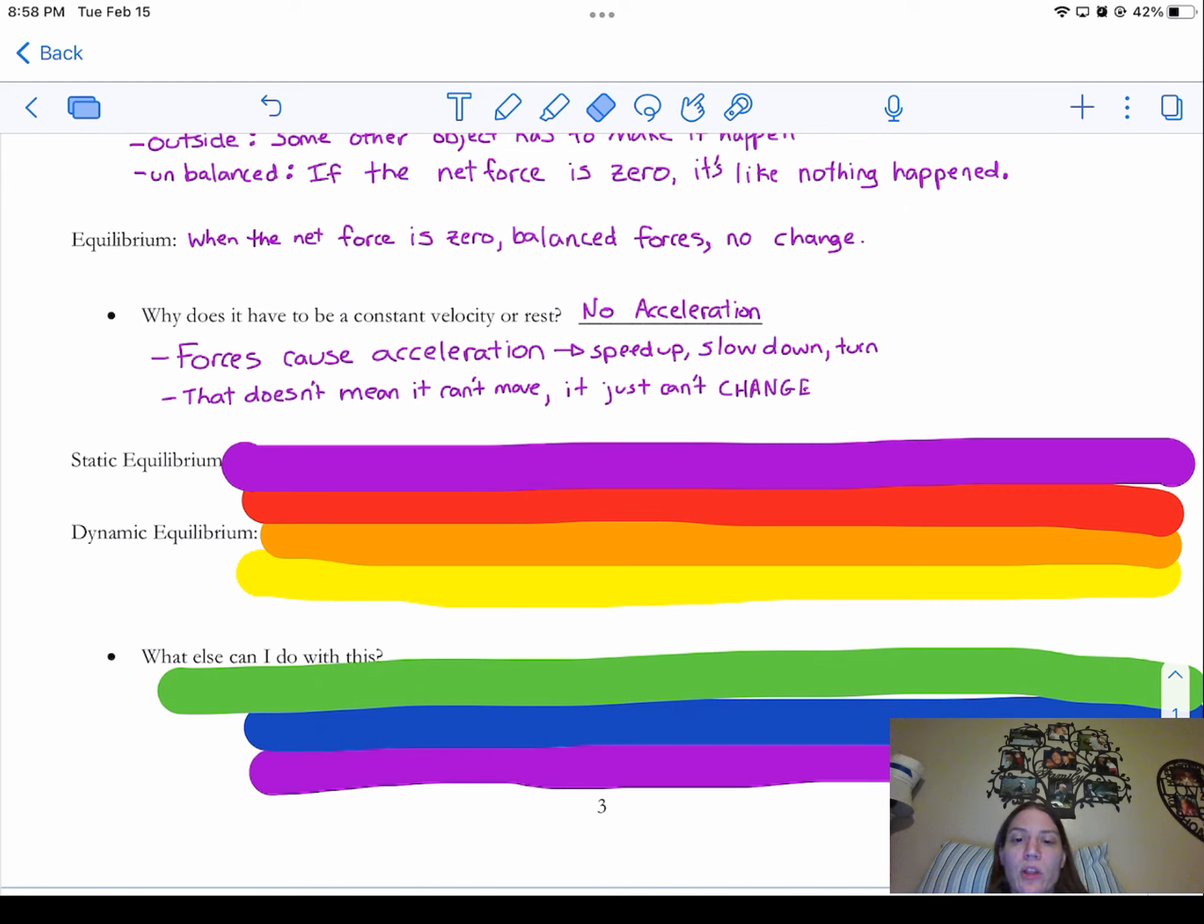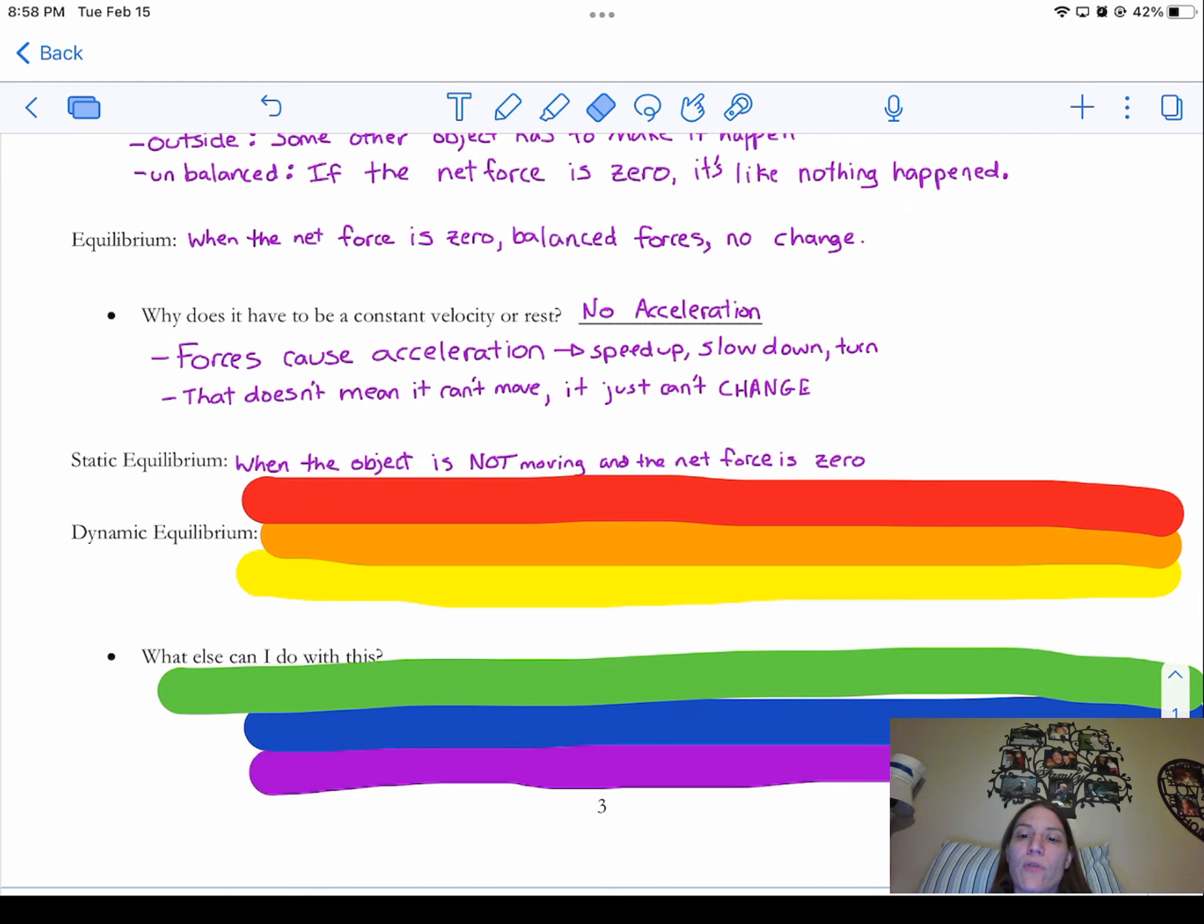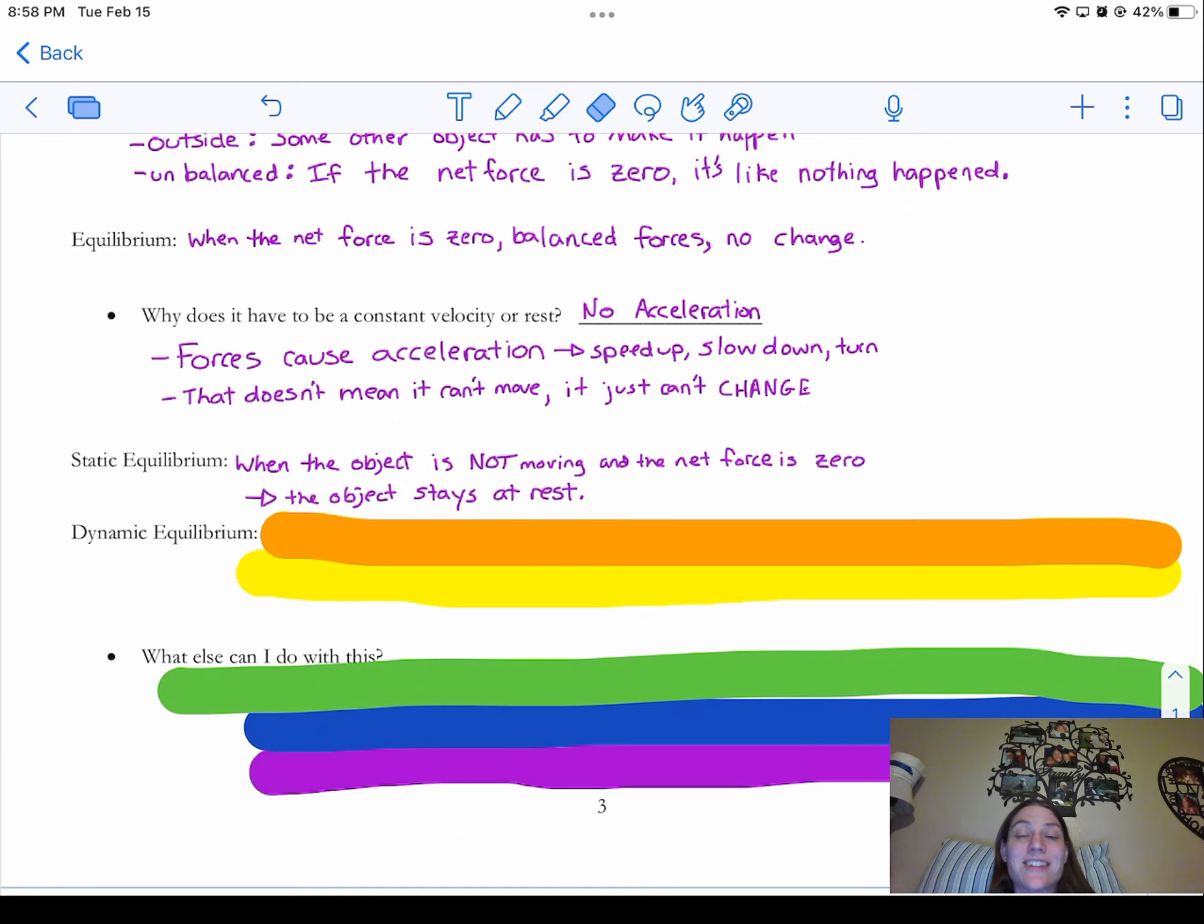So there's two kinds of equilibrium, static and dynamic equilibrium. Static equilibrium is what we call it when they're not moving. Static, like stationary, means they're not moving. So when an object is not moving and the net force is zero, that means that the object will stay at rest.